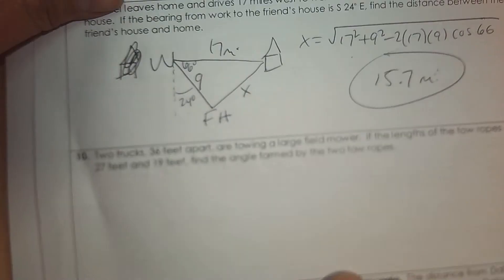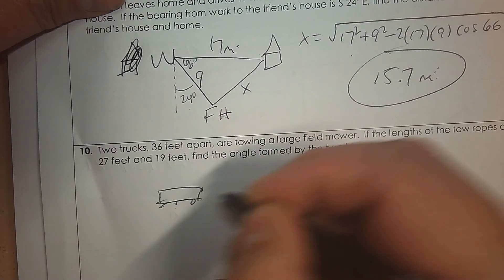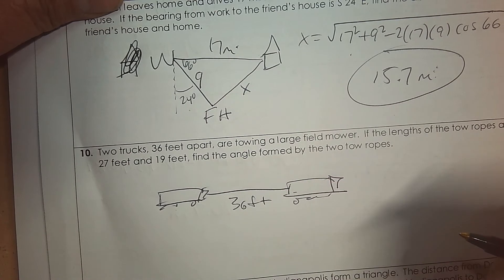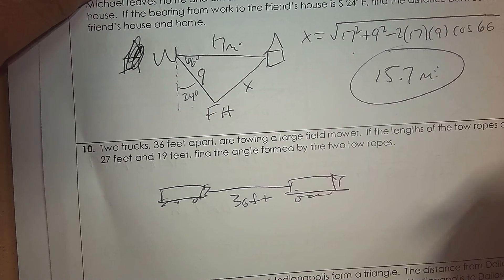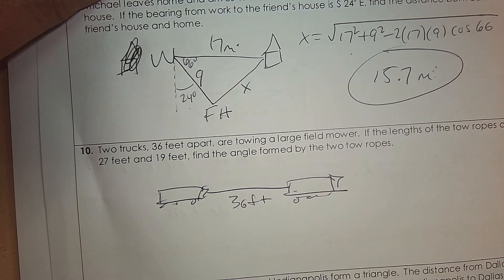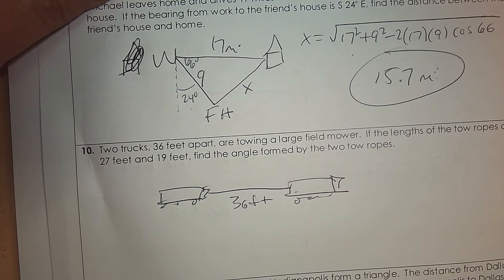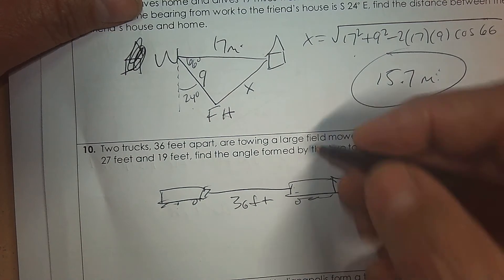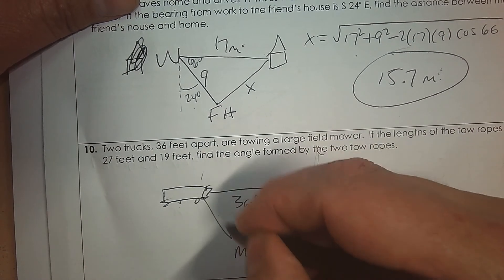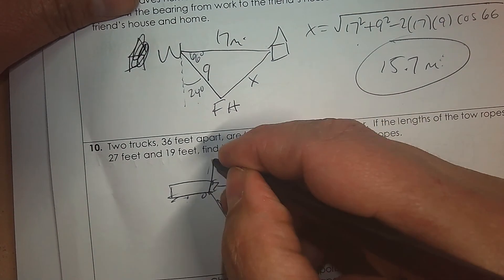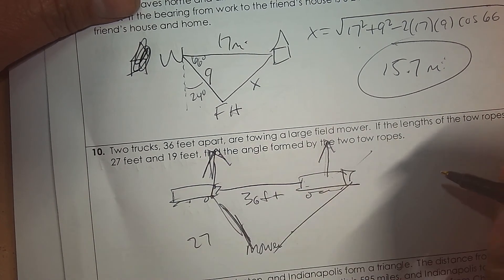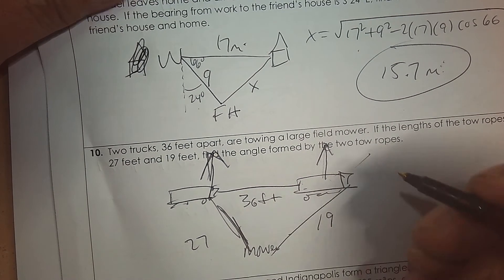Number 10. Two trucks 36 feet apart are towing a large field mower. If the lengths of the tow ropes are 27 feet and 19 feet, find the angle. These two trucks together are towing this. So they're 36 feet apart. They're actually towing it this direction. So here's a mower. So both the trucks are towing this mower, but they're going forward. So it's more like this direction as they're towing it. If the lengths of the tow ropes are 27 feet and 19 feet, what's the angle here made by the two ropes? So this angle down here.